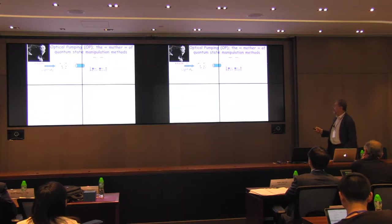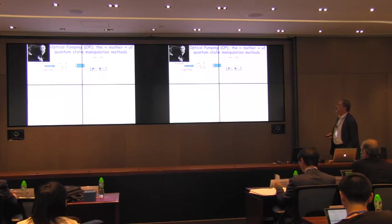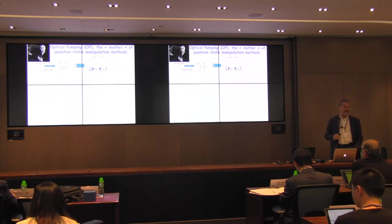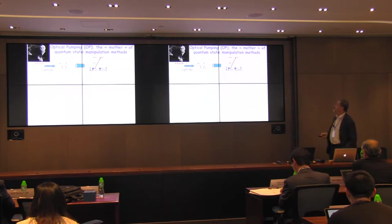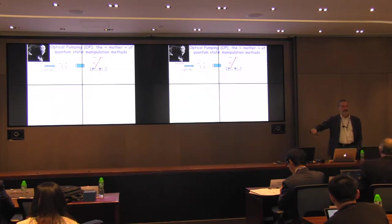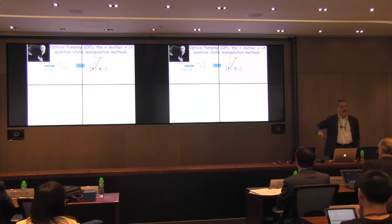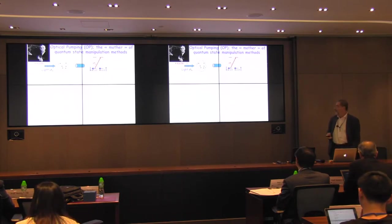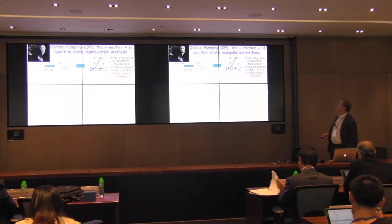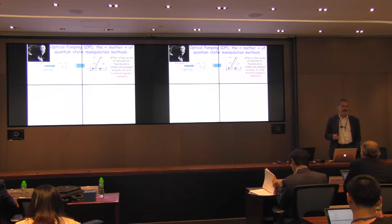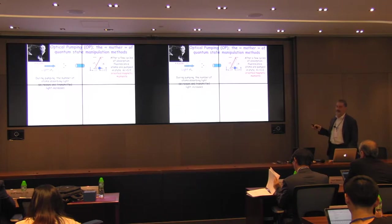Optical pumping is a method to orient atoms in a gaseous sample. It was the first method to manipulate internal states of atoms and put atoms out of equilibrium. The principle: you have atoms considered as two-level systems in a cell and you shine circularly polarized light on them. In the ground state the atoms have spin-down and spin-up states. With circularly polarized light, the only allowed transition takes the atom from spin-down in the lower state to spin-up in the upper state. After one cycle, there is a probability the atom transfers to the other state, and after a few cycles all the atoms end up in a dark state that can no longer absorb light.